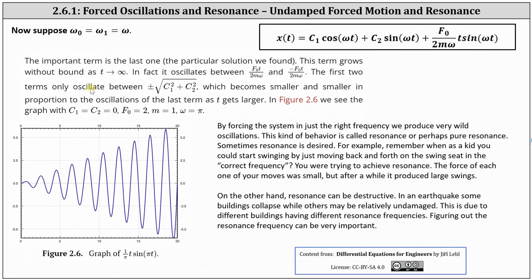Let's take a closer look at this general solution. The important term is the last term, which has a factor of t in it. This term grows without bound as t → ∞, oscillating between ±F₀t/(2mω). The first two terms oscillate between ±√(c₁² + c₂²), which becomes smaller and smaller in proportion as t grows. In figure 2.6, we see the graph with c₁ = c₂ = 0, F₀ = 2, m = 1, and ω = π. By forcing the system at just the right frequency, we can produce wild oscillations. This behavior is called resonance, or pure resonance.